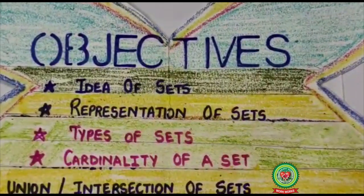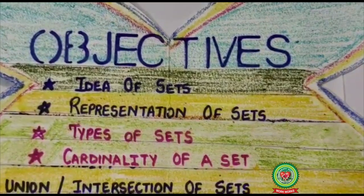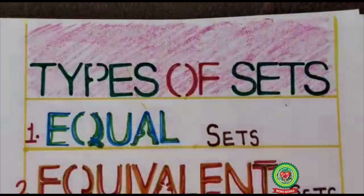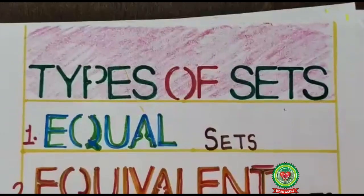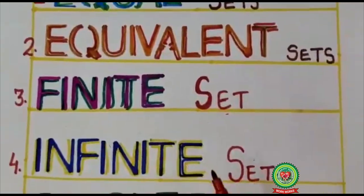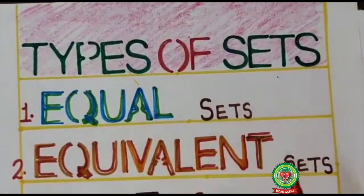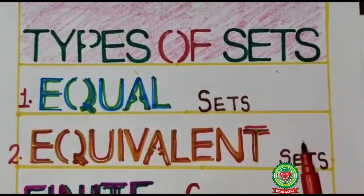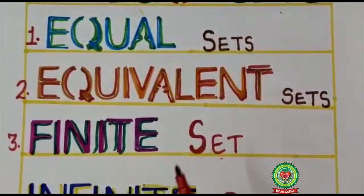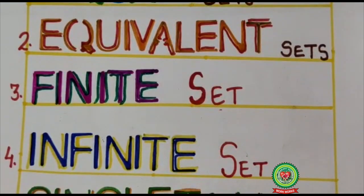In types of sets, I have told you that there are following types of sets: equal sets, equivalent sets, finite set, infinite set, singleton set, empty set. We have already done equal sets and equivalent sets. Today we will continue with finite set and infinite set.